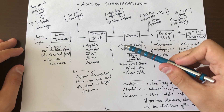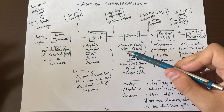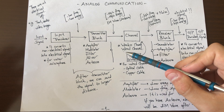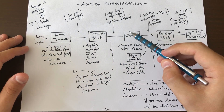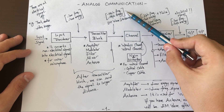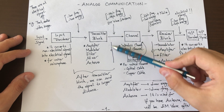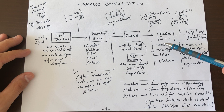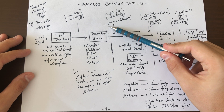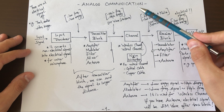After the transmitter block, we can send the signal over a longer distance — that is actually the target of communication. We use analog or digital communication to send our message to longer distances. After the transmitter block, the signal has high frequency and high energy, and if we use a wireless channel, the signal becomes an electromagnetic wave because we use an antenna to send it without wire.